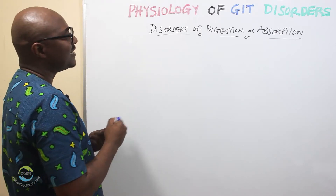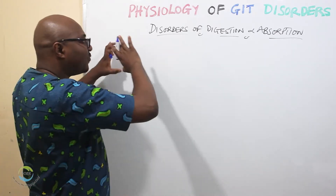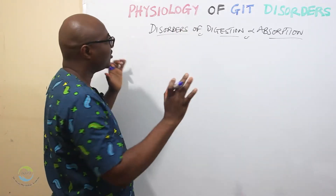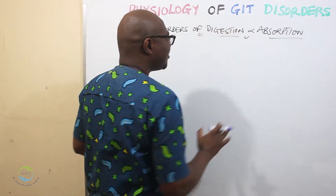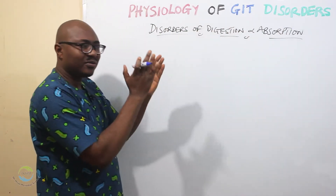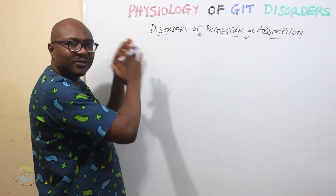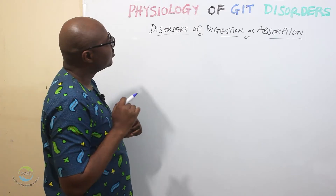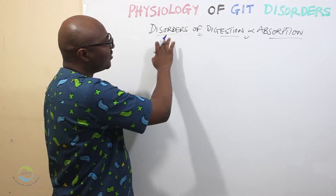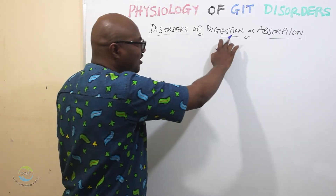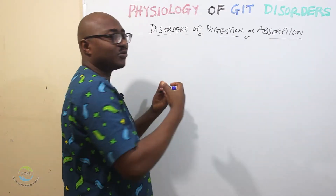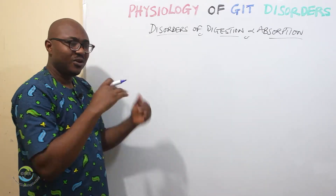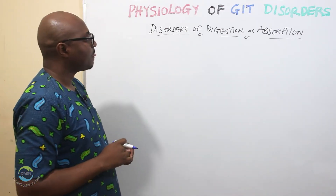We are nearing the end of GIT physiology — physiology of GIT disorders. We've talked about that of motility, that of secretion. Now we want to talk about that of digestion and absorption, which are also very important functions of the gastrointestinal tract.